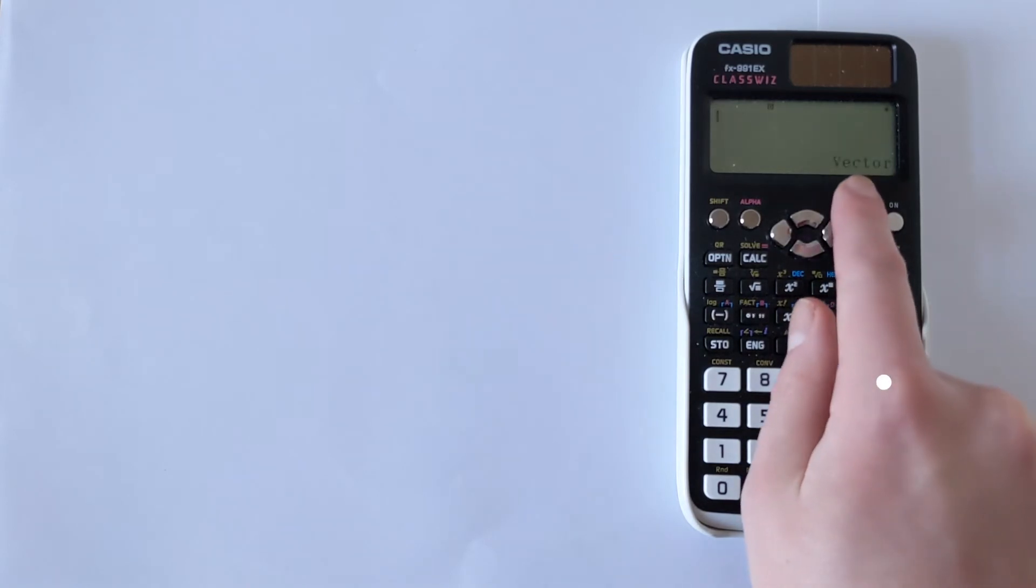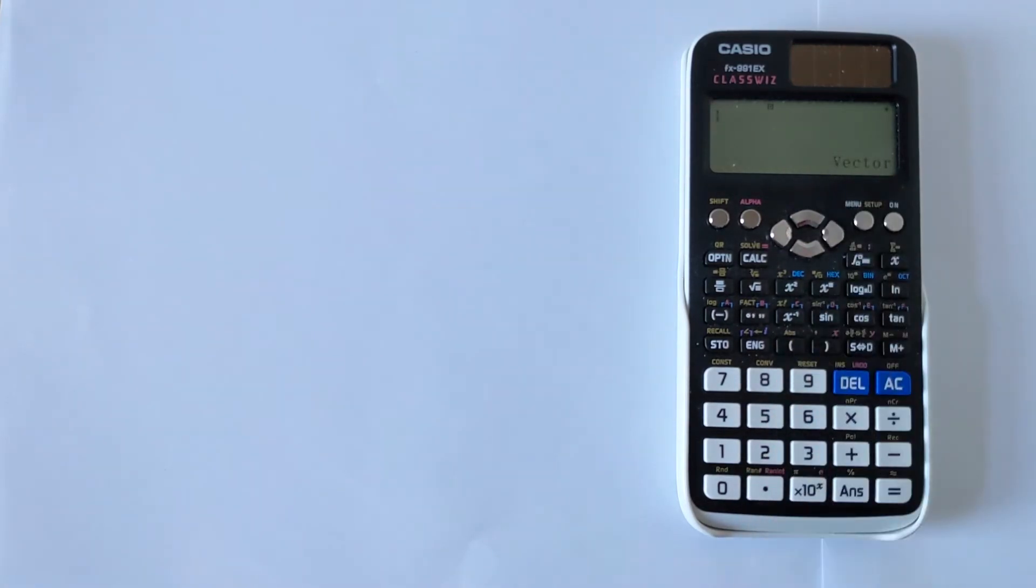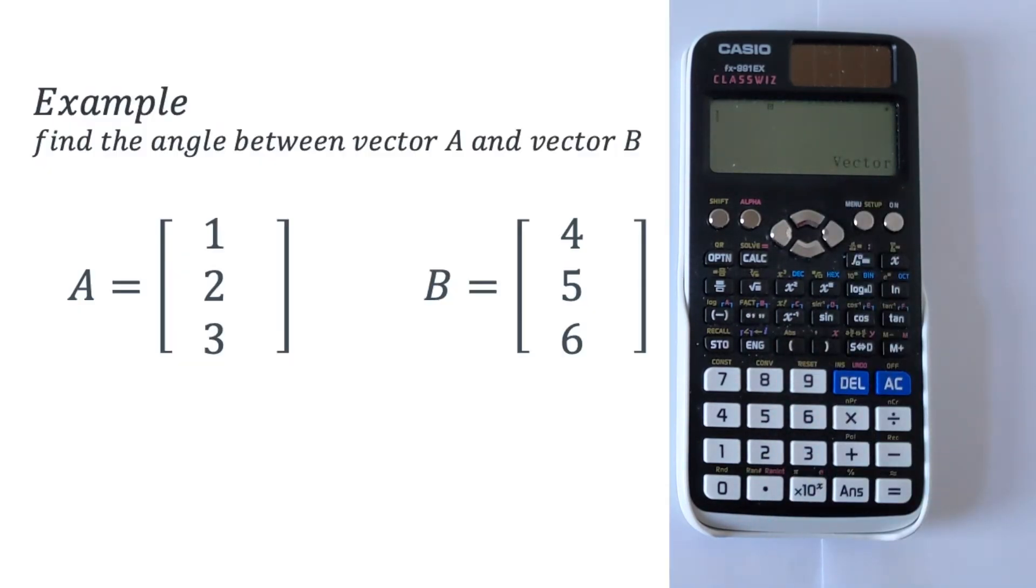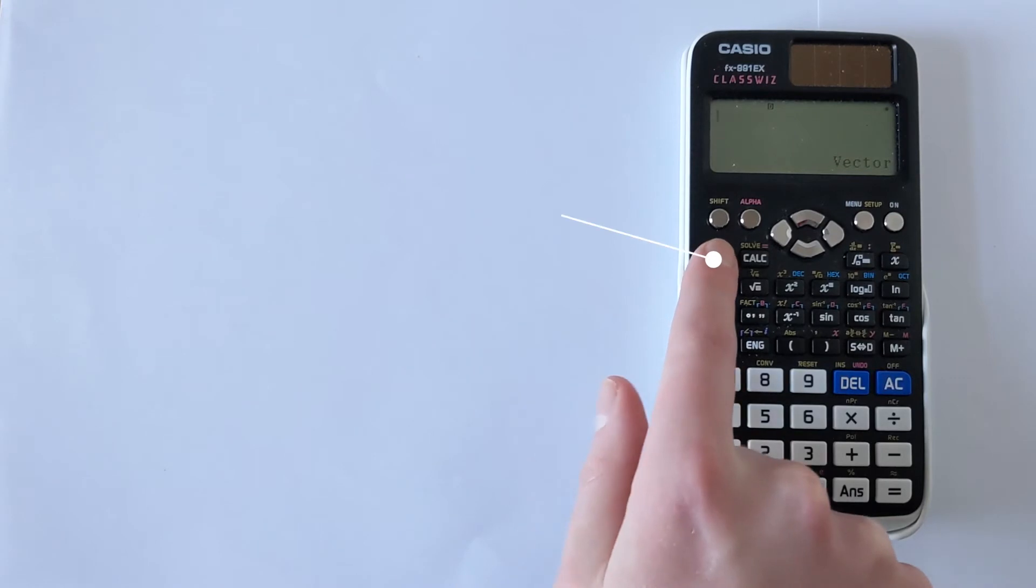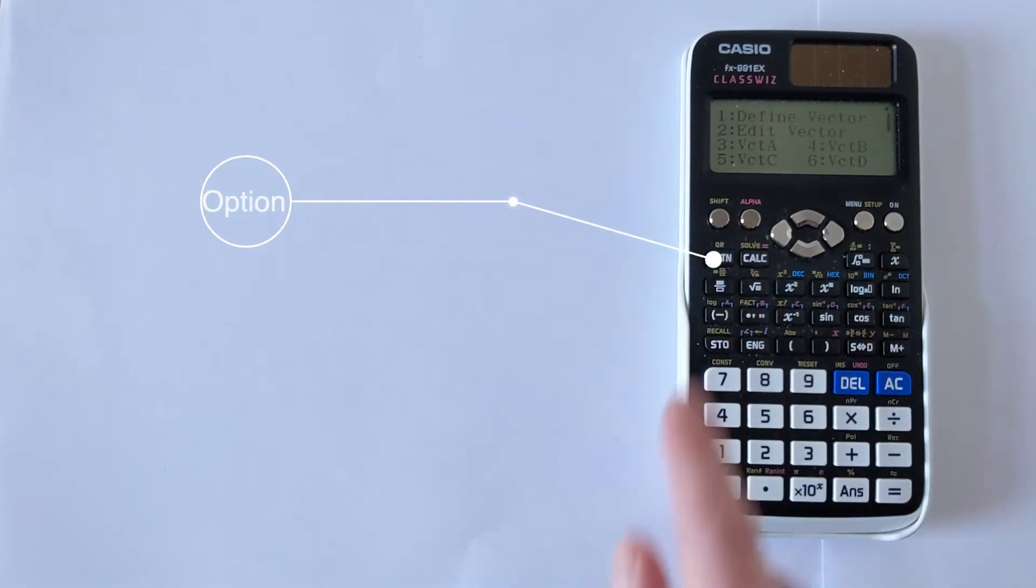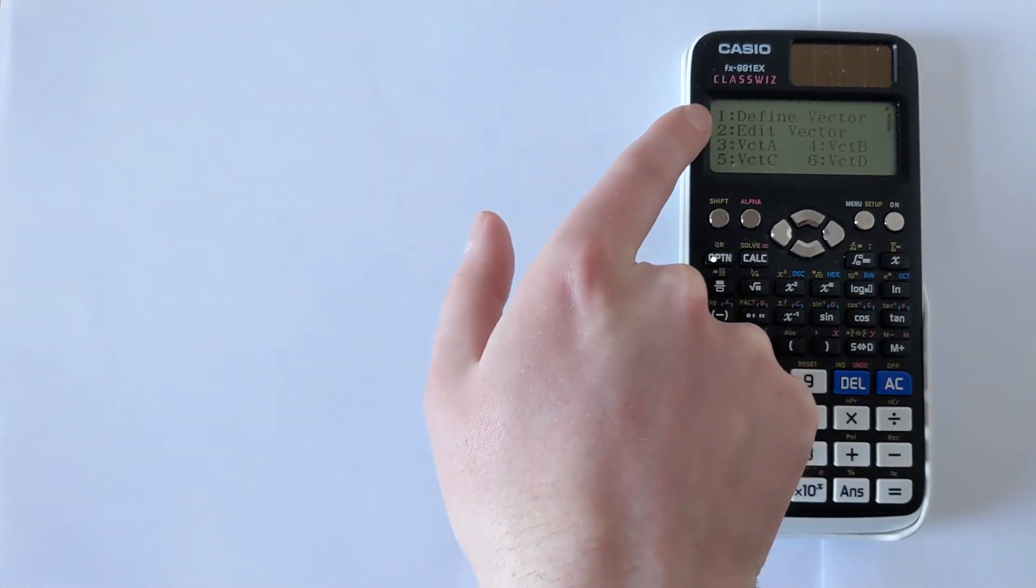This will bring up the word vector, showing you that you're in the right function. The next thing you need to do is input vector B. To do that, you need to use this button here for option. You press the option button.